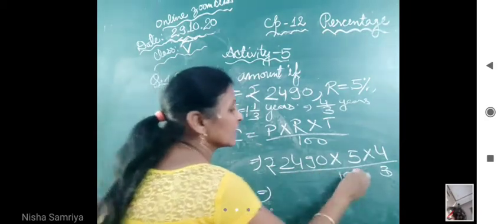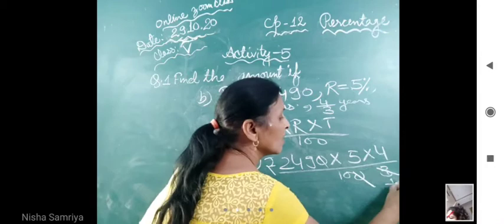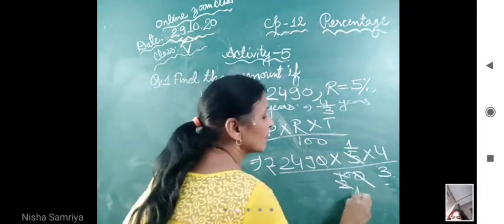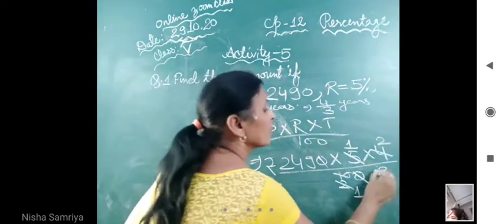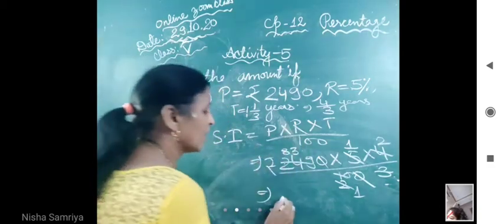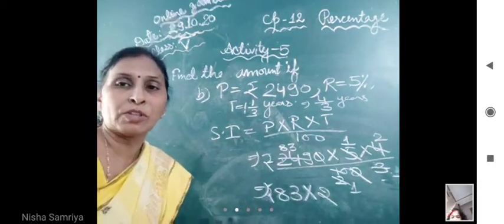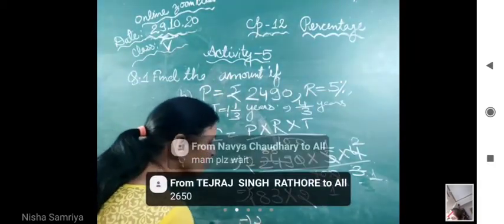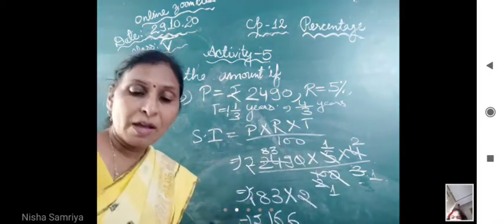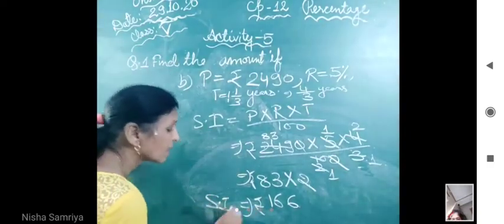Now we cancel this zero with this zero. Ab ham se ham isko cancel karenge. Then 3 cancel. 5's are 5, 5's are 10, 2's are 4. Then ham karya 3's are 3, 3's are 24, and 3's are 9. Hamare paas me upar kya bacha? 3 into 2. Aur niche kuch bhi nahi ha. Ham isko multiply kar diya. Then 2 threes are 6, 2's are 16. Hamare paas kya aaya? 166. Clear? Rupees 166.